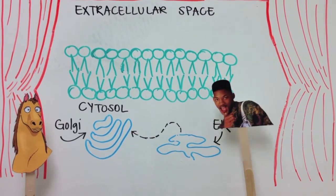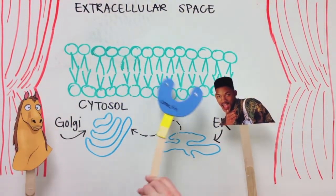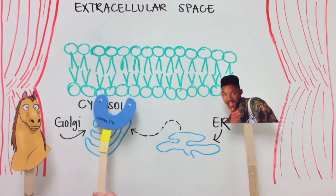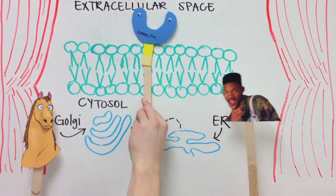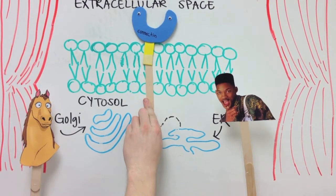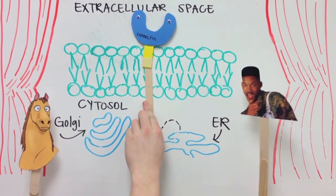For example, my buddy Connectin follows the secretory pathway. Its GPI anchor links to the exterior of the cell membrane, where it acts as a cellular adhesion molecule. Thanks, Connectin!